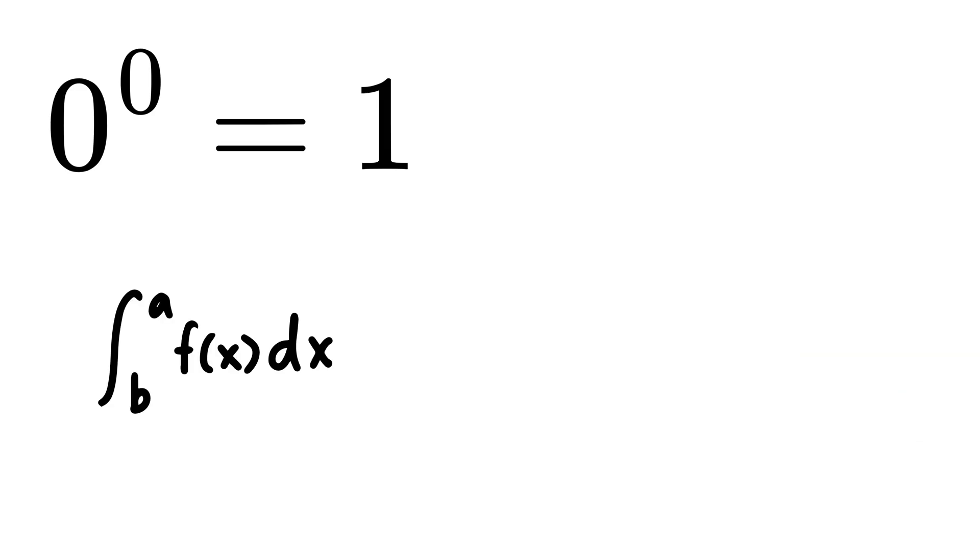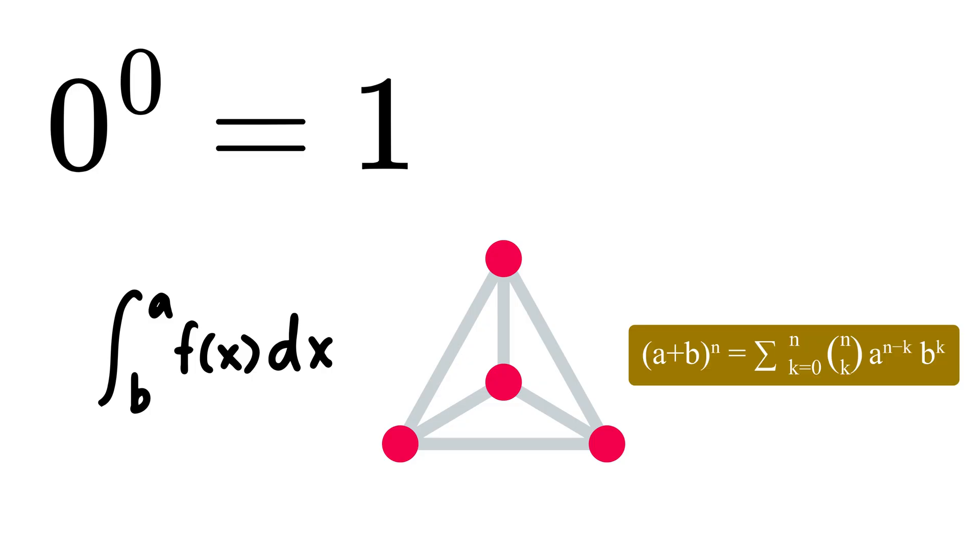Like in calculus, combinatorics, or binomial expansion, where expressions like x raised to zero or zero raised to zero pop up, assuming the result to be one just helps the entire formula stay neat and behave well.